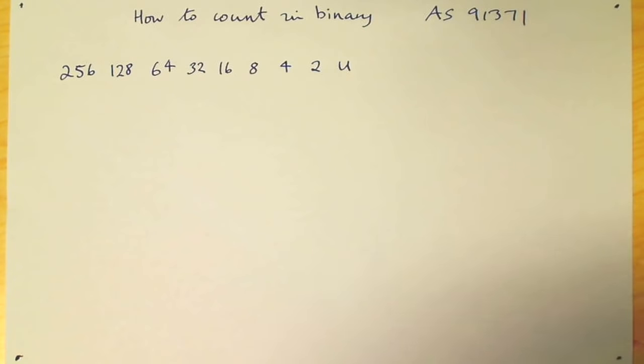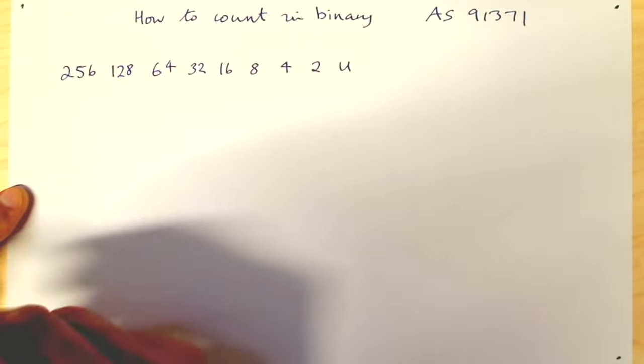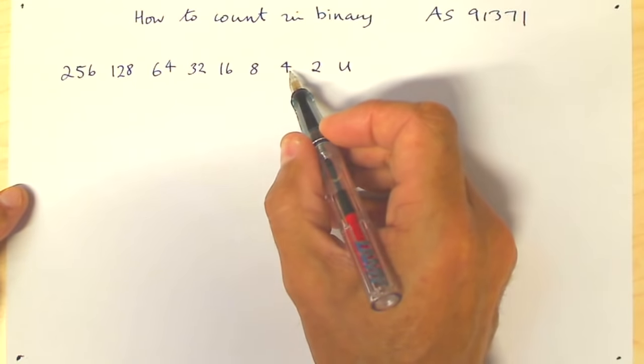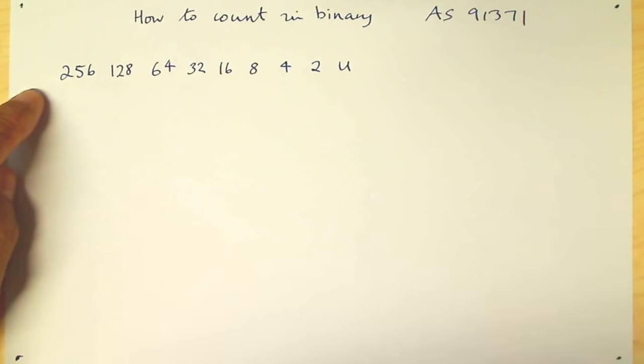You'll see there's a pattern, and the pattern is that it goes up in units of doubling. So 2 doubles to 4, 32 doubles to 64, and so on. So the next number over here will be 512.